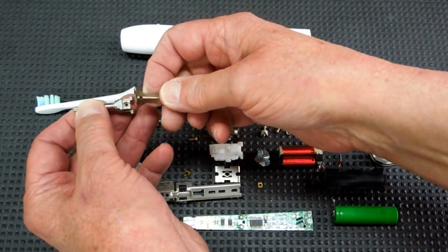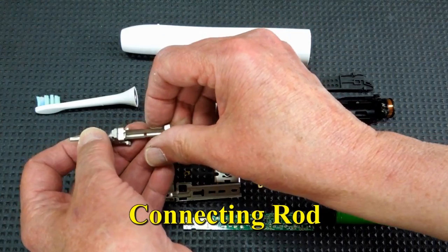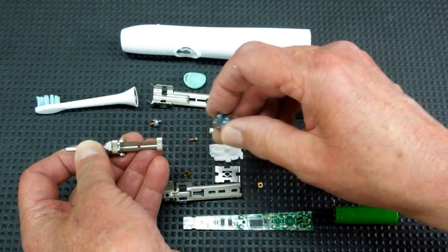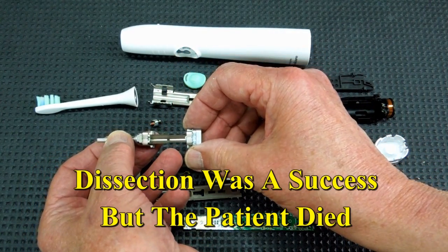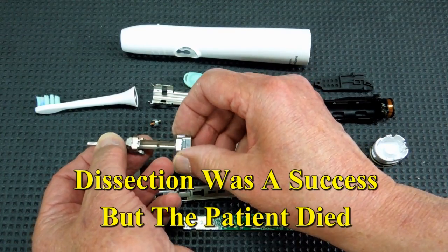You got the final output shaft. This piece fit onto there, and the magnet fit on here. As that magnet oscillated, it transmitted that high frequency oscillation to the output shaft.